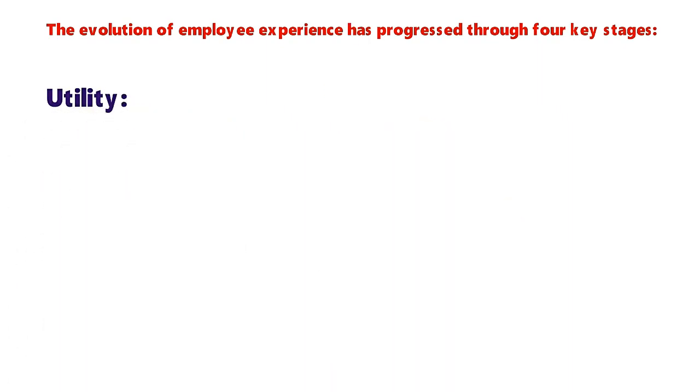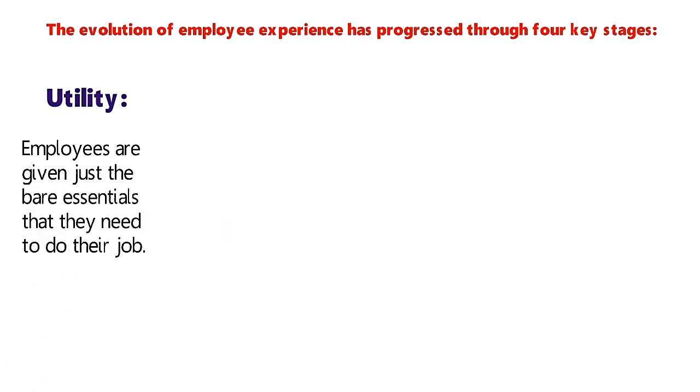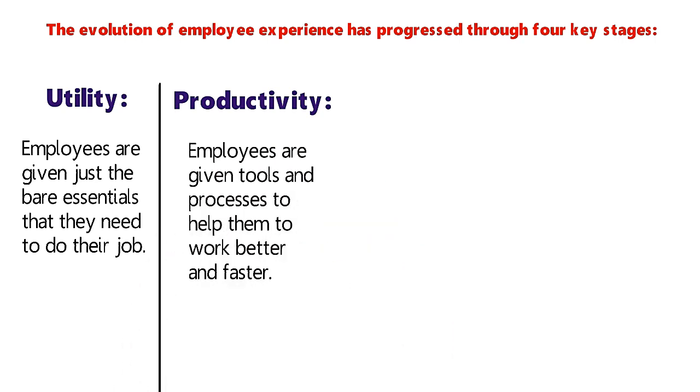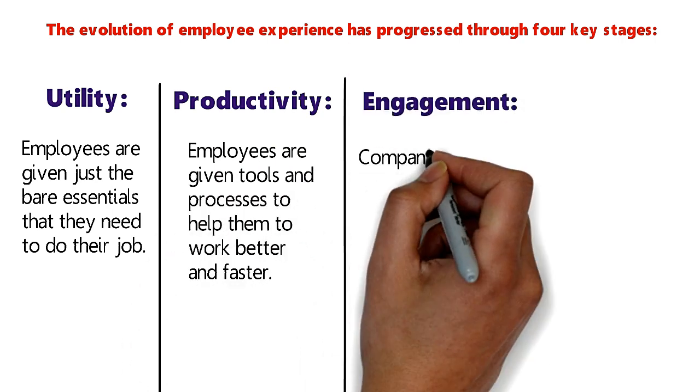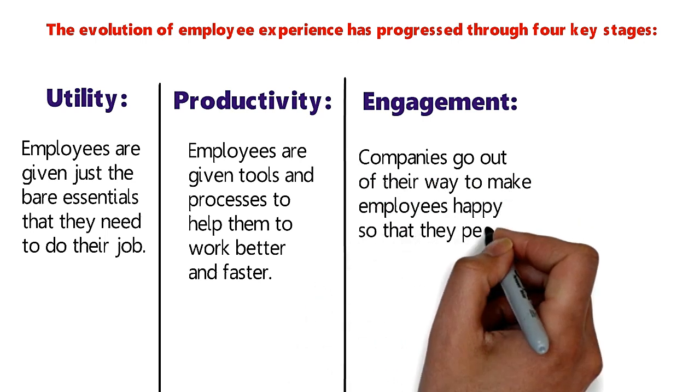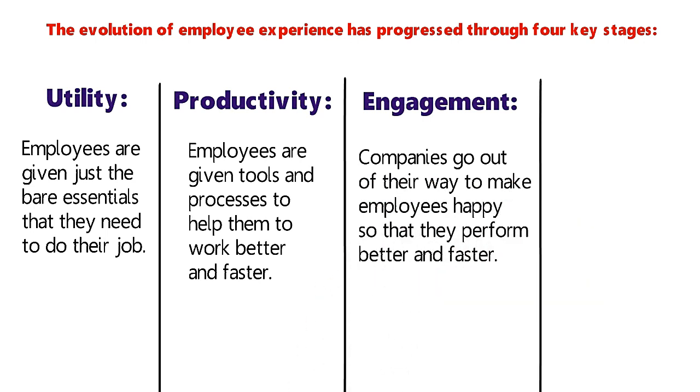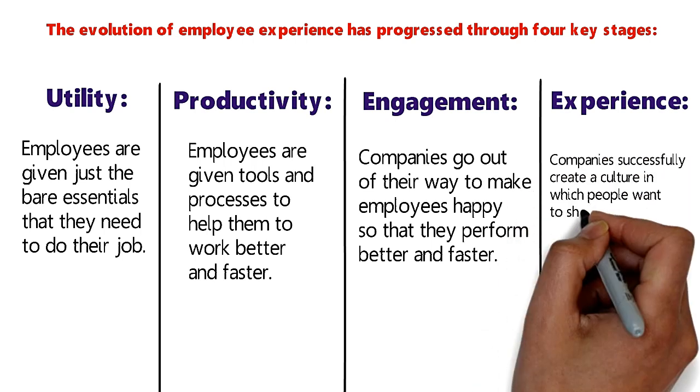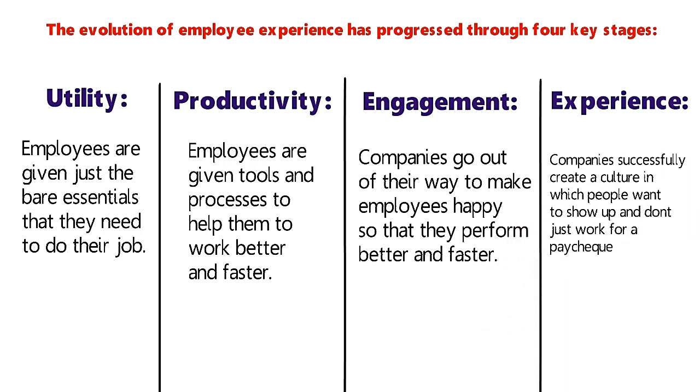Utility: Employees are given just the bare essentials that they need to do their job. Productivity: Employees are given tools and processes to help them work better and faster. Engagement: Companies go out of their way to make employees happy so that they perform better. Experience: Companies successfully create a culture in which people want to show up and don't just work for a paycheck.